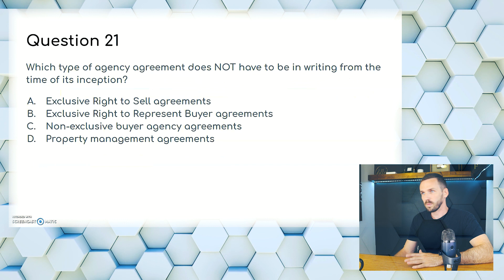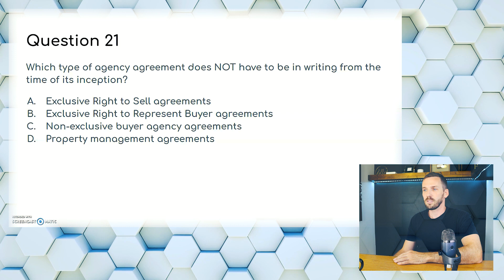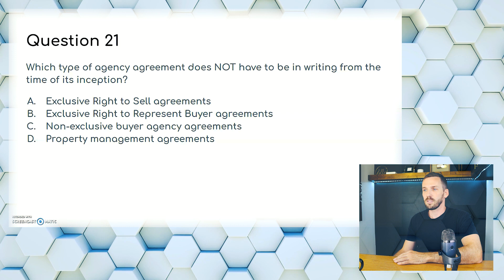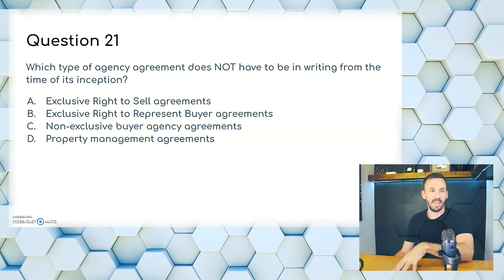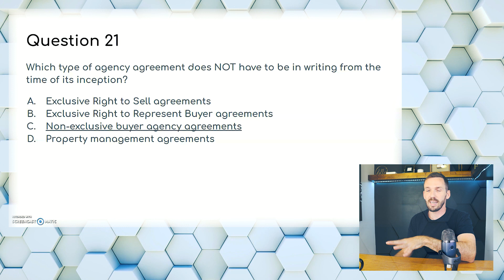Question 21. Which type of agency agreement does not have to be in writing from the time of its inception? A, exclusive right to sell agreements; B, exclusive right to represent buyer agreements; C, non-exclusive buyer agency agreements; or D, property management agreements. Non-exclusive means the buyer can move from agent to agent, so there's no need for it to be in writing. The answer is C. Chapter 7 has over 21 questions on the test — that's over 10% of the exam. Study chapter 7 and chapter 11. Up next is chapter 8 on agency contracts, where you learn how to calculate your commission.